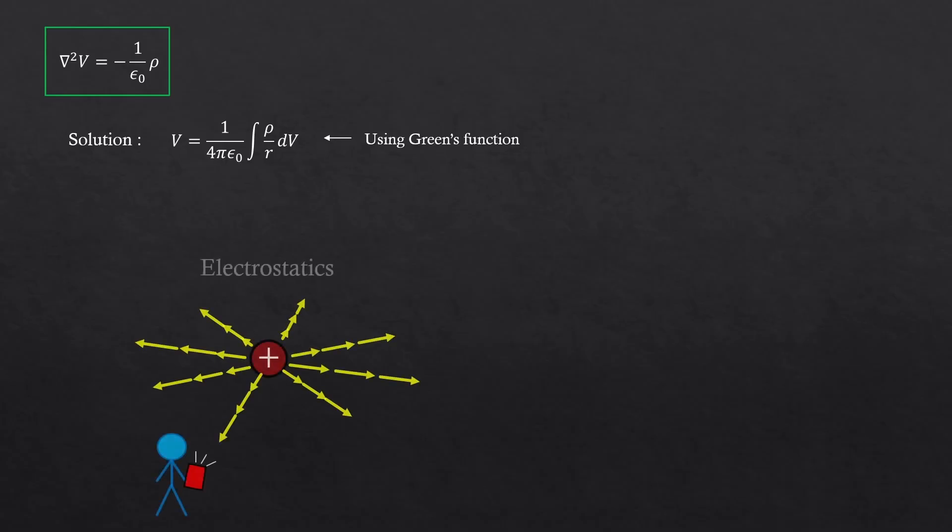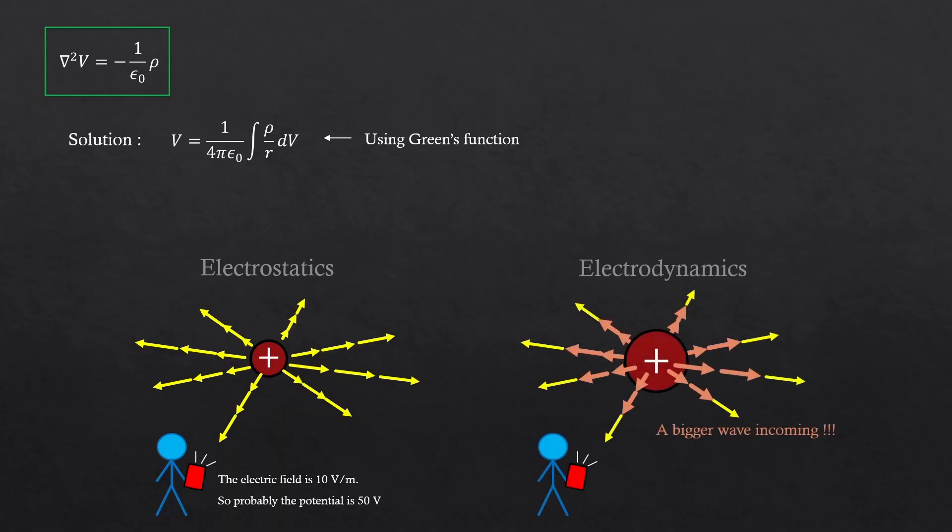The mathematical solution to this equation is this. You can derive it by applying Green's function. But did you know that this equation is actually for the electrostatic case? In electrostatics, you can exactly predict the scalar potential just by measuring the electric field, no matter where you are. Because everything is static, and nothing will change.